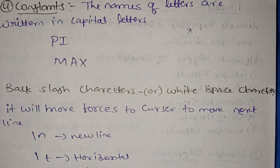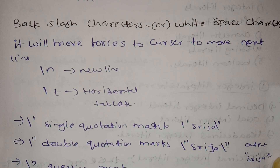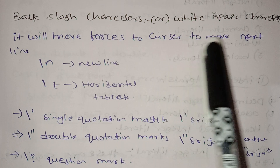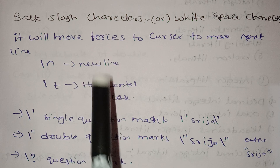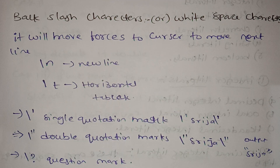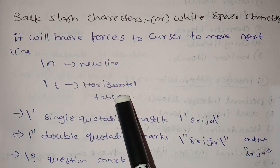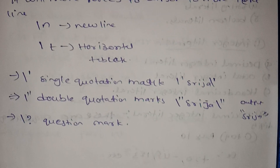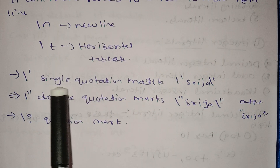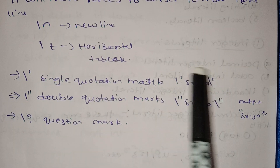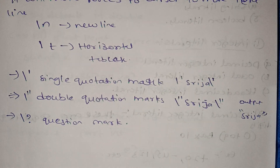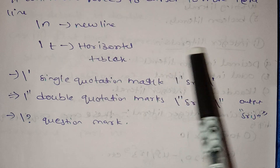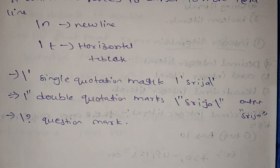Backslash characters, also called whitespace characters: backslash-n forces the cursor to move to the next line — there is a new line. Backslash-t is a horizontal tab. We also have special output with backslash and quotation marks.